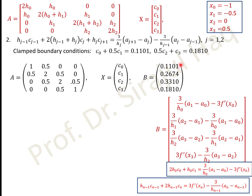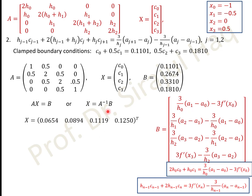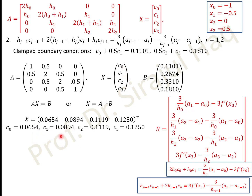Solving the system Ex = b gives the solution vector: c0, c1, c2, c3. These are the required values. Once the c_i values are computed from the matrix system, all remaining coefficients can be obtained from the formulas for b_j and d_j.